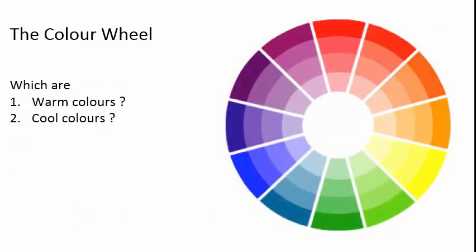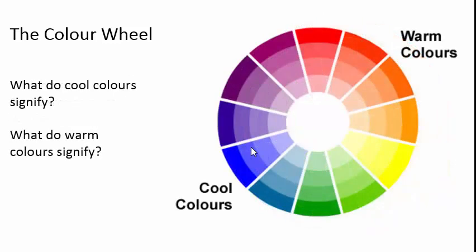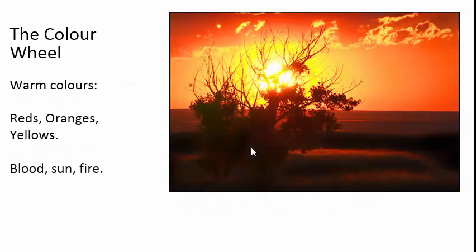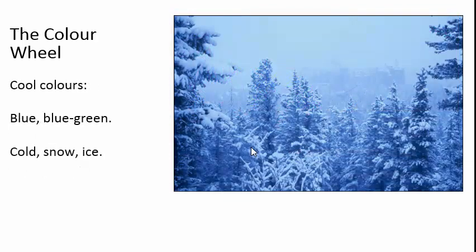So warm colors versus cool colors — warm is on one side, cool is on the other. How does this apply to making films? What we want to know is the feeling these colors produce. Warm colors — reds, oranges, yellows — evoke blood, sun, fire, warmth, happiness, sunsets. These are friendly colors, nice colors.